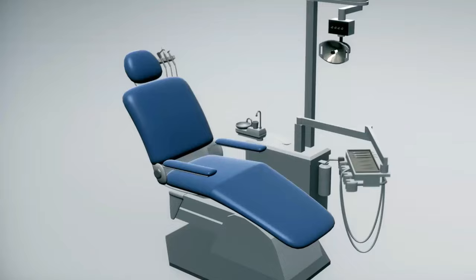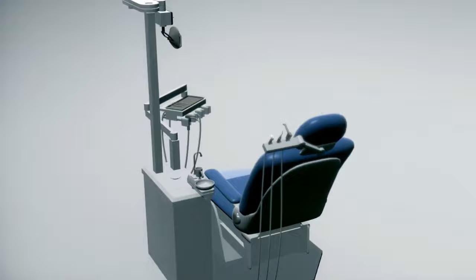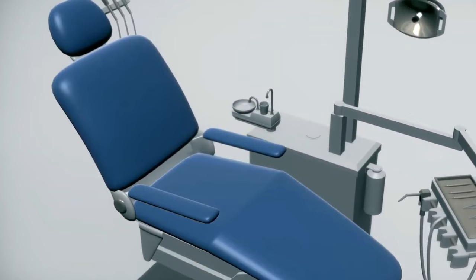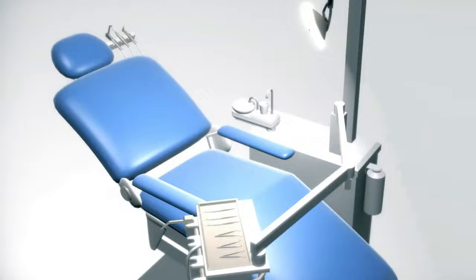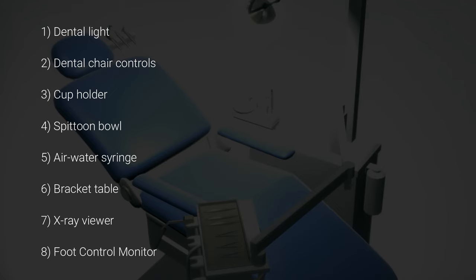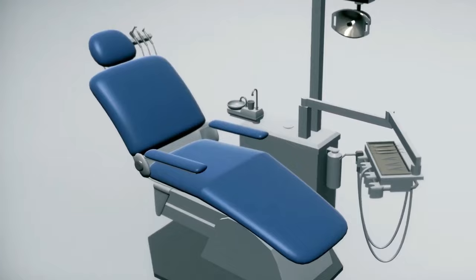There are several components of a dental chair that it might seem overwhelming. However, these components are fashioned in such a way to deliver comfort, convenience, and functionality to the patient, the dentist, and the overall dental procedure. We will be discussing eight of these components, namely dental light, dental chair controls, cup holder, spittoon bowl, air water syringe, bracket table, and x-ray viewer.